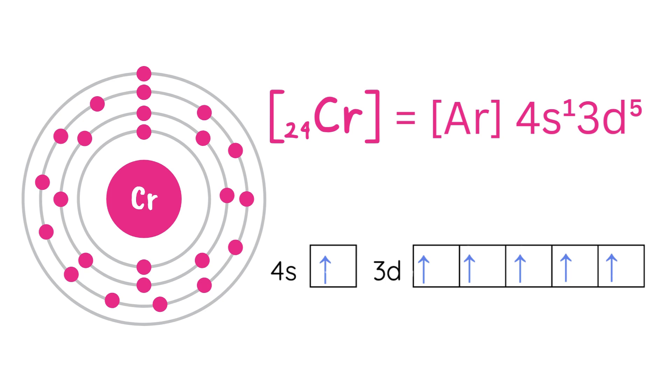So to recap, Hund's rule ensures that electrons fill orbitals in a way that minimizes repulsion and maximizes stability.